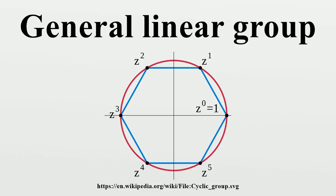General semilinear group: The general semilinear group ΓL(n,F) is the group of all invertible semilinear transformations and contains GL(n,F). A semilinear transformation is a transformation which is linear up to a twist,